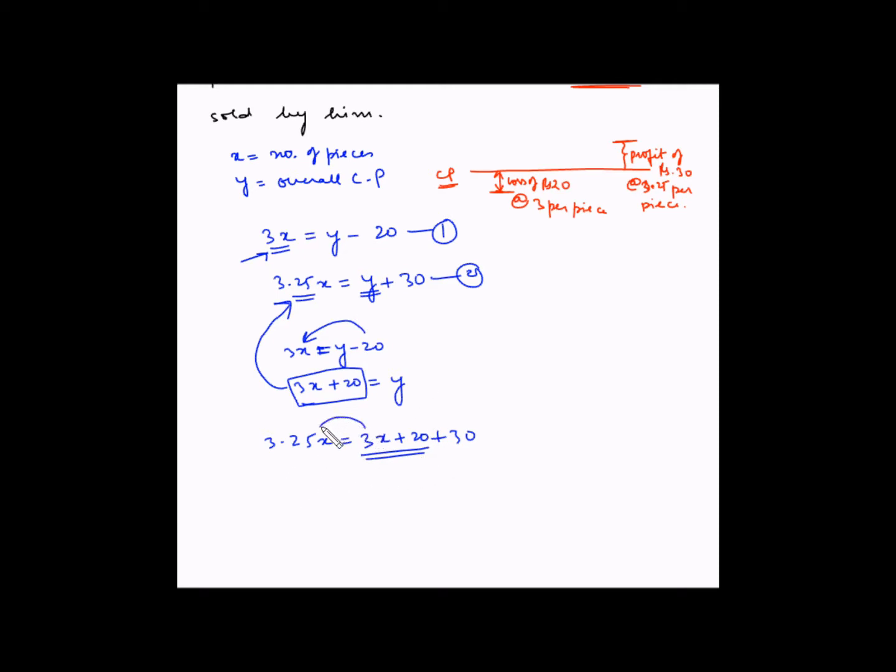So now let's bring X on this side. This becomes 3.25X minus 3X is equal to 20 plus 30 is 50. So this becomes 3.25 minus 3 is 0.25 times X is equal to 50.